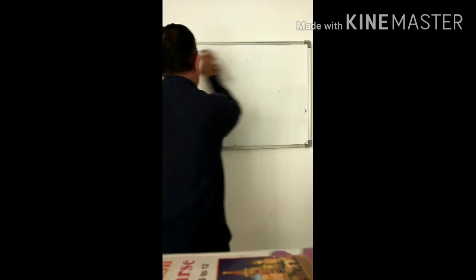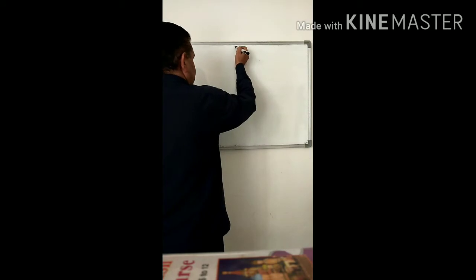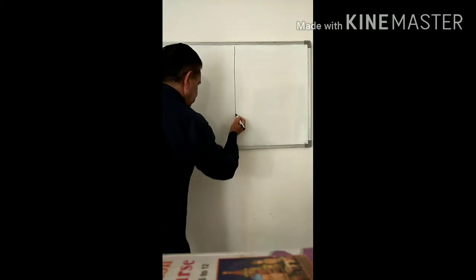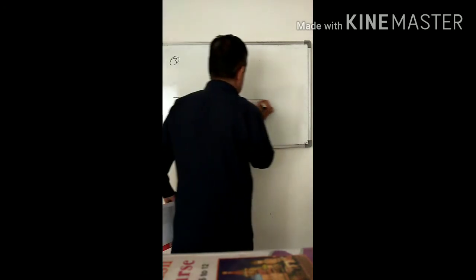Question number 3. Look at this question. Plot the points A, B, C, D. What kind of coordinates are A, B, C, D? Find its area. First of all, you have to draw the y-axis and x-axis.